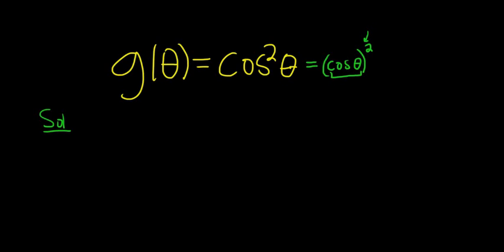So we'll start by taking the derivative of the outside. So g prime of theta is equal to, that means you take the 2 and you put it in the front. We're going to use what's called the power rule. So 2, then you leave the inside alone, so cosine theta.